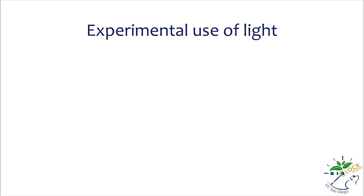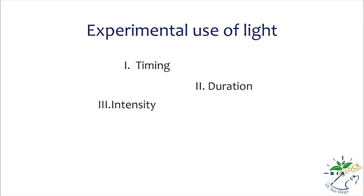When investigating the effects of light experimentally, there are at least four important factors of the stimulus we need to pay attention to: timing and duration of the stimulus, and the intensity and the wavelength composition of light. These four factors are always important, whether you study humans, rodents, or plants.